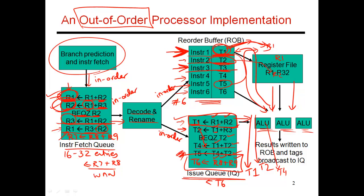If all six reorder buffer entries are used up, the decode and rename stage must stall because there's no space to bring in the seventh instruction. But once the first instruction commits, you can cycle over and instruction 7 gets placed in that first entry, using T1 as its destination. This is why it's important to correct any references to the old T1 — someone else is now going to produce a result in T1, and you must not confuse register names. These are the basics of what an out-of-order processor does, with more details to be covered in the next video.